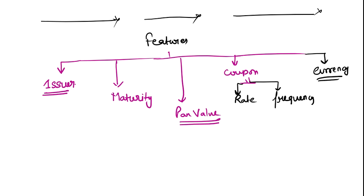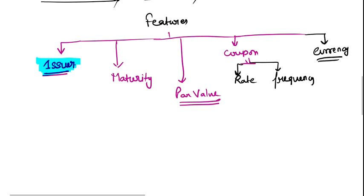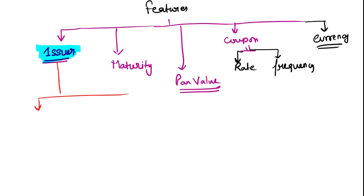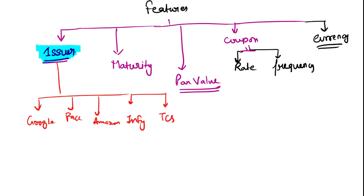There are basically five different kinds of issuers. First is corporations — companies, which can be financial or non-financial. Non-financial examples include Google, Facebook, Amazon, Infosys, and TCS. Financial companies include banks and NBFCs. Both financial and non-financial organizations can issue bonds as corporations.